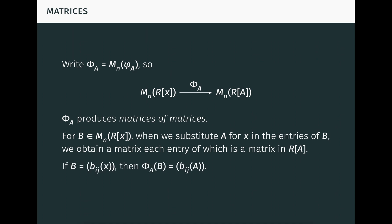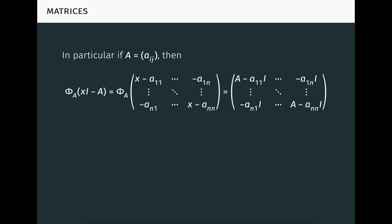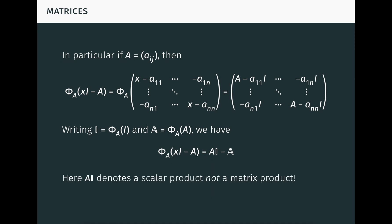Concretely, if the ij-th entry of B is the polynomial B_ij of x, then the ij-th entry of big Phi_A of B is the matrix B_ij of A. In particular, big Phi_A of the characteristic matrix of A is the matrix of matrices seen here. Writing bold I for big Phi_A of I and bold A for big Phi_A of A, big Phi_A of the characteristic matrix equals A bold I minus bold A. Critically, A bold I denotes a scalar product, not a matrix product. You might say the matrix A identifies as a scalar in this context.